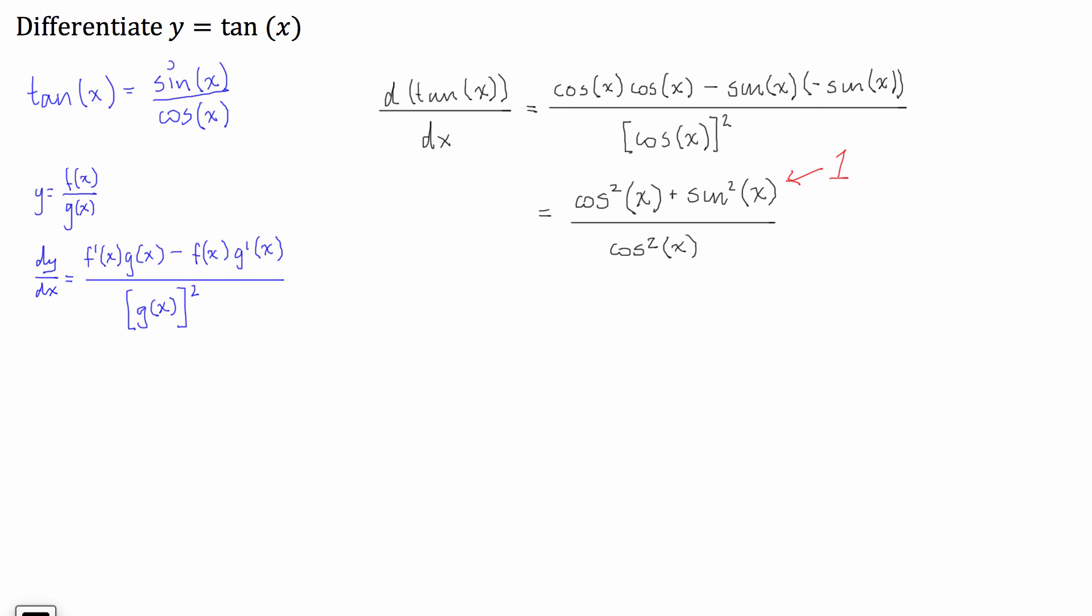So, what we'll do is on the next line, we can replace that with just 1, and then we have over the cosine squared of x.